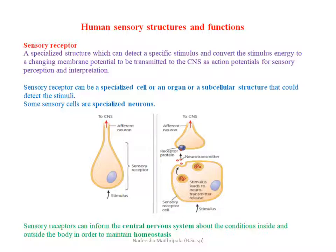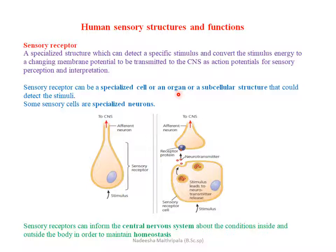Sensory receptors can be specialized cells, as seen in a sensory receptor cell diagram, or they can be specialized neurons. They can also be organs acting as sensory receptors — for example, our eye and ear. Additionally, there are subcellular structures found within cells that can also act as sensory receptors.